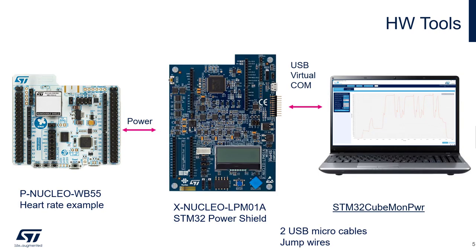From the hardware point of view we will need an STM32 WB Nucleo board, STM32 Power Shield, two USB micro cables and some jumper wires. Power Shield supplies the WB and measures the current consumption over time. After we load the test firmware into WB, the power wires will be the only connection to the target. Power Shield communicates with the PC over USB virtual COM port to transfer the measured data into Q-Monitor Power software tool.